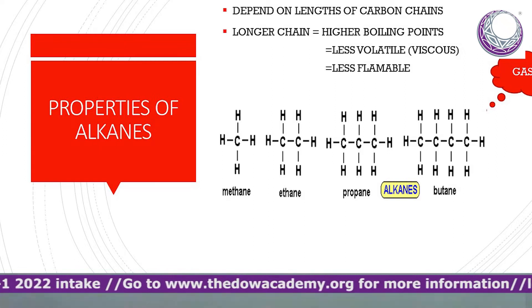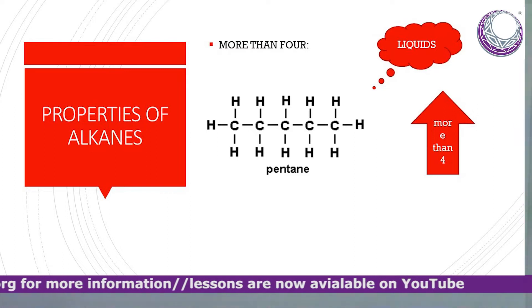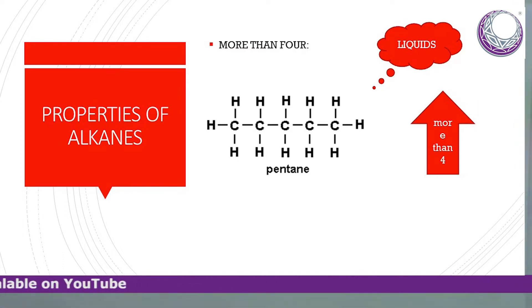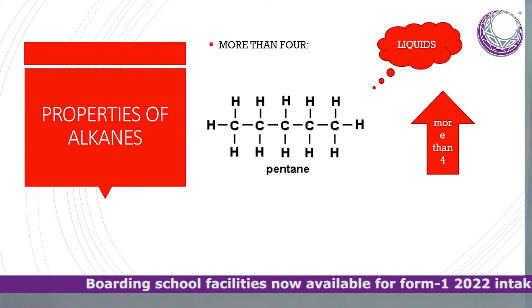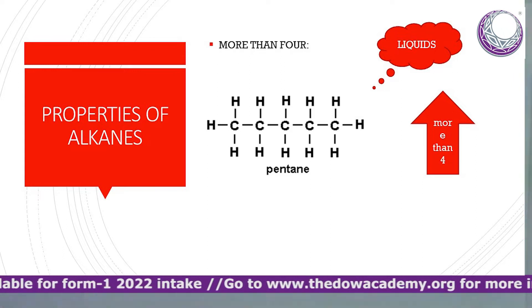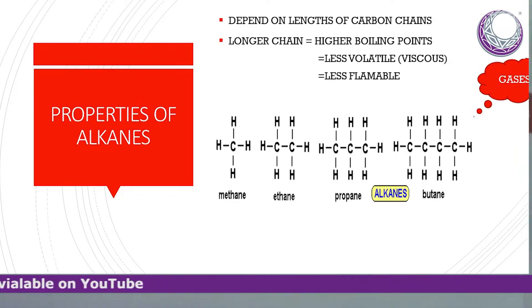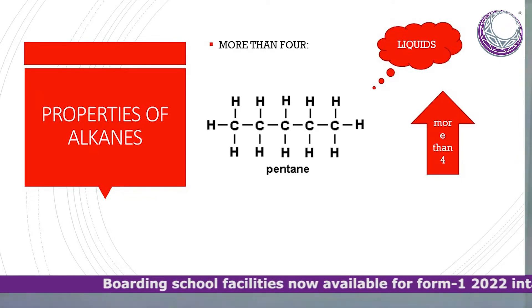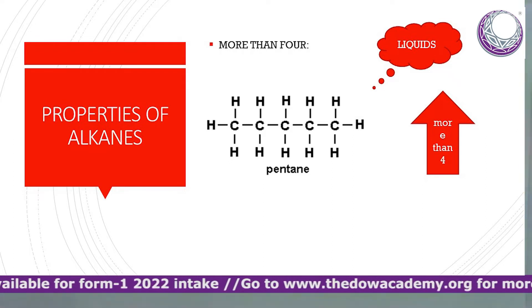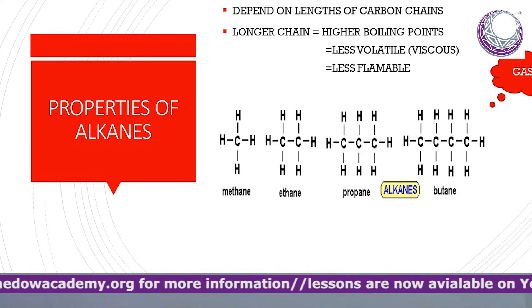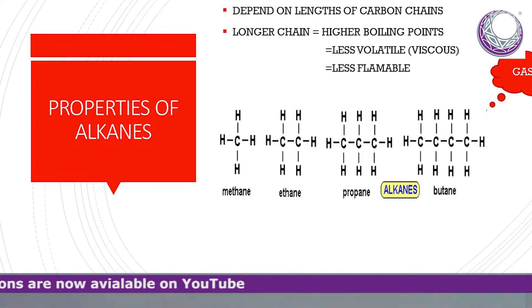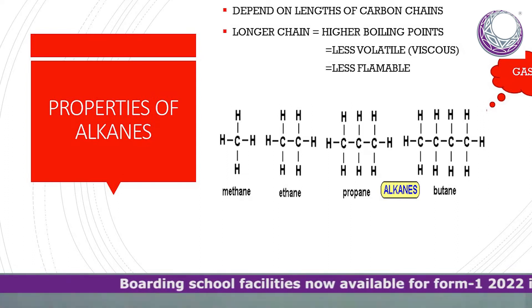Pentane has got five carbon atoms and twelve hydrogen atoms — five plus five is ten, plus two end hydrogens makes twelve. Pentane exists as a liquid, while shorter chains like methane, ethane, propane, and butane exist as gases. As the carbon chains increase, they change from gaseous state to liquid, then to solid. Pentane is less volatile than butane because it has more carbon atoms.